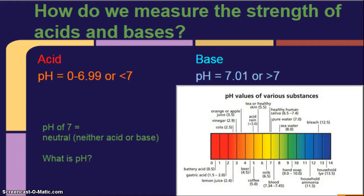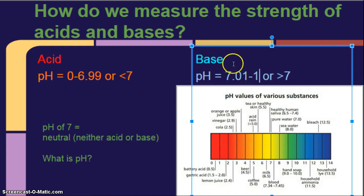How do we measure the strength of acids and bases? Well, remember in our notes we have acids are less than 7, or 0 to 6.99999. Bases, the pH is anything bigger than 7, all the way up to 14, or we would just say greater than 7. If it's exactly 7, it's neutral, neither acid or base.